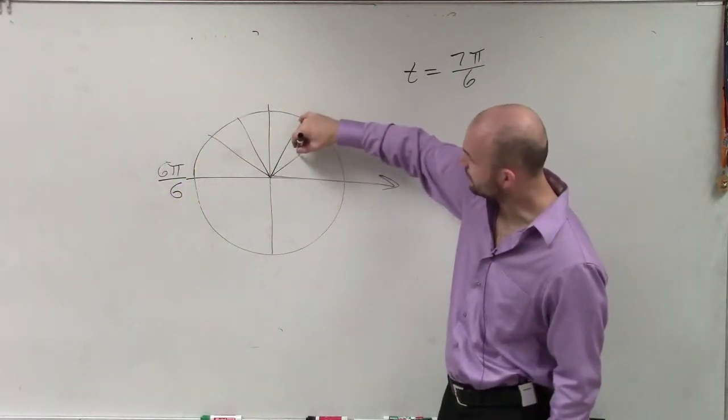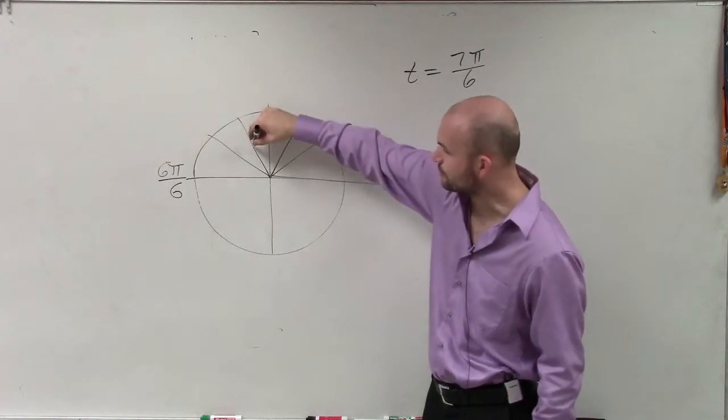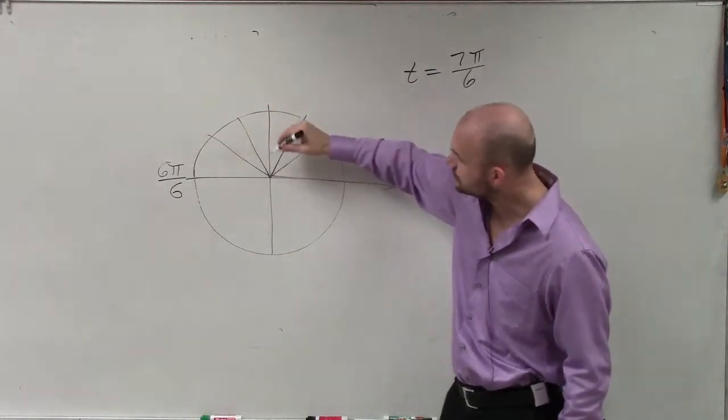Therefore, if I start here, this would be 1 pi over 6, 2 pi over 6, 3 pi over 6, 4 pi over 6, 5 pi over 6, 6 pi over 6.